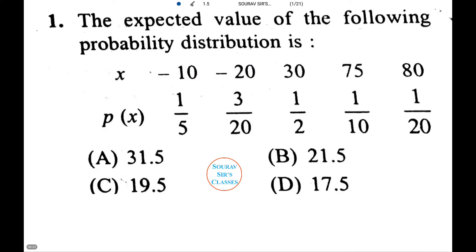Now we need to find the expected value of the following probability distribution. x is minus 10, minus 20, 30, 75, 80 and their respective probability is 1 by 5, 3 by 20, 1 by 2, 1 by 10 and 1 by 20.